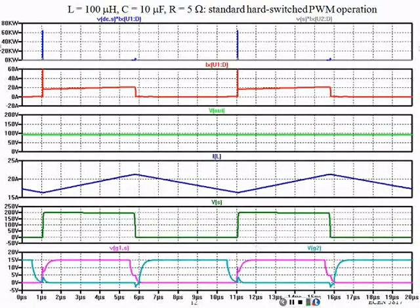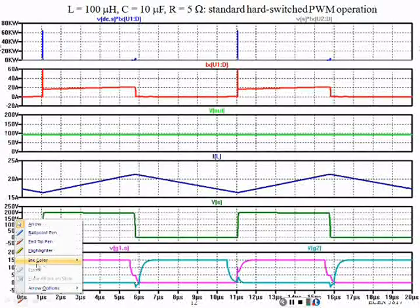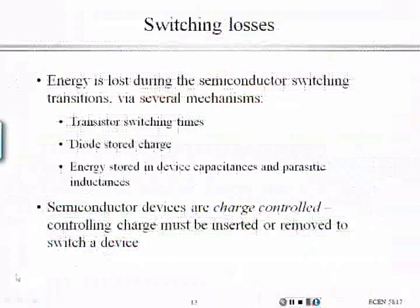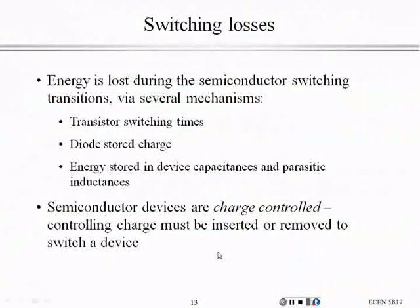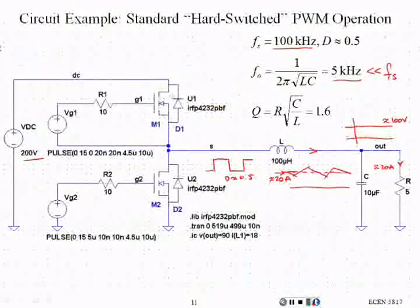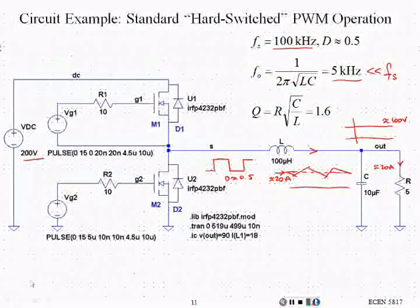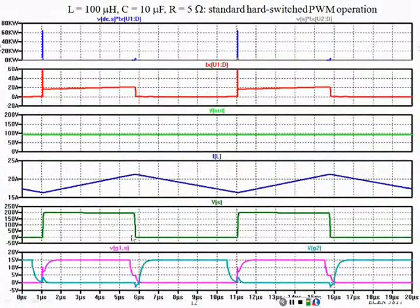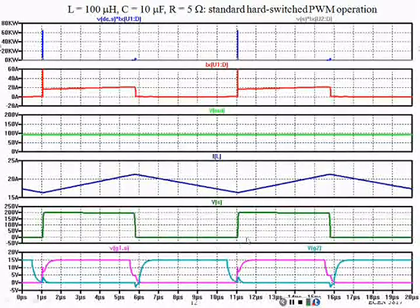There is a small gap between the conduction of the two devices because we cannot afford to turn both FETs on at the same time, of course. The V_S is the switch node voltage — a pulsating waveform, very easily understood. It goes from about zero to about 200 volts, steps back, and repeats in time.